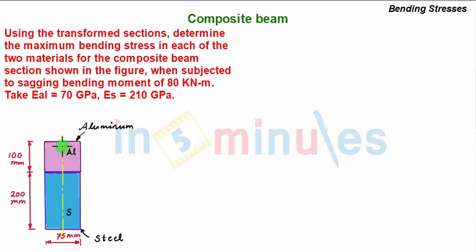These two beams are joined together to form a composite beam and is being subjected to a bending moment of 80 kN-meter and is sagging. And we have been asked to find out maximum bending stresses in each of the sections.